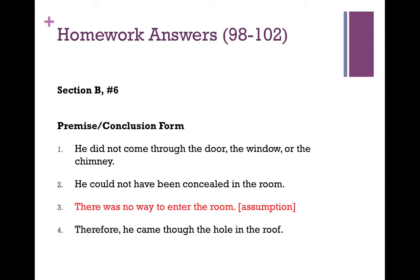That assumption is: there's no other way to enter the room. Maybe he used a transporter — but this is an assumption the argument is making. Here's how we would diagram the argument. Now, if you wanted to, you could separate premise one into three different premises: he did not come through the door; he did not come through the window; he did not come through the chimney. In which case, when you diagram the argument, it would just be one plus two plus three plus four plus 5A down to six. So if you did that, that's fine. If you just combined them the way I did, that's also acceptable.